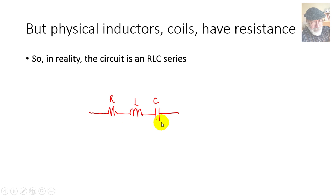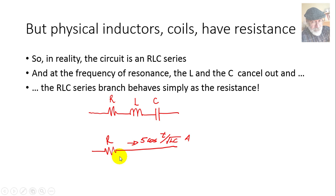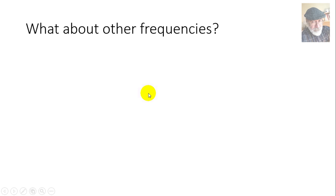What happens at resonance in the RLC circuit? The resonant frequency is still 1/√(LC). At that frequency, L and C cancel out, and all we're left with is just the resistance. A current of frequency 1/√(LC) sees only the resistance, while any current of any other frequency sees the resistance plus the combined impedance of the inductor and capacitor, which will not be zero.